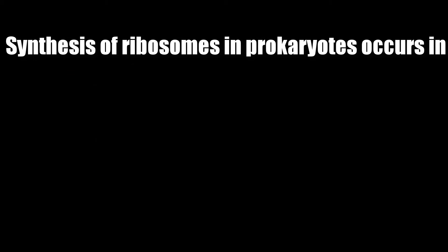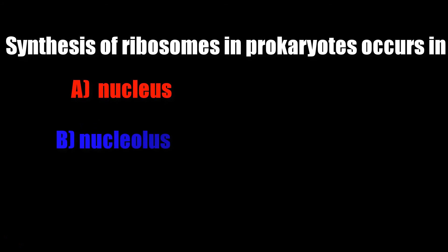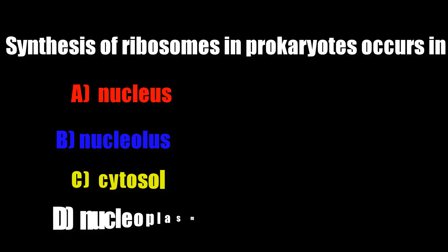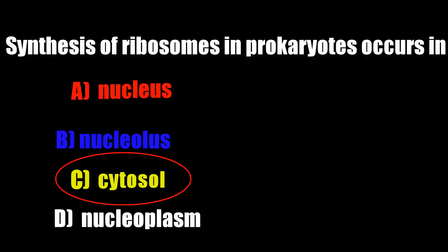Synthesis of ribosomes in prokaryotes occurs in: nucleus, nucleolus, cytosol, nucleoplasm. Correct answer is cytosol.